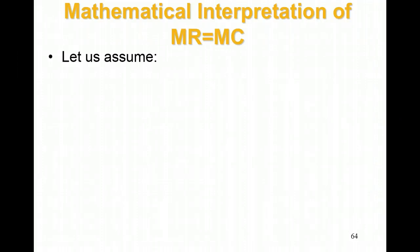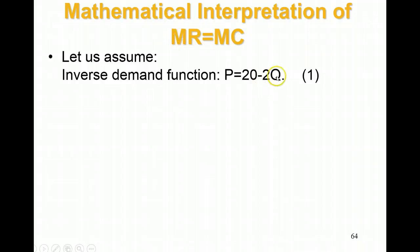Let's start with an inverse demand function of P equals 20 minus 2Q. Basically, if you plug in quantity here, you can get your price. This is looking at any point on a demand curve.